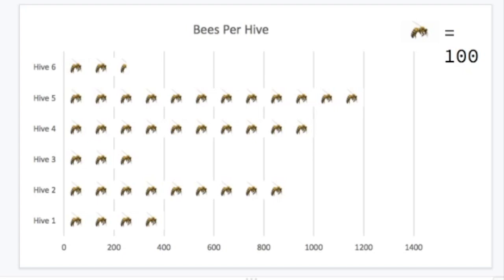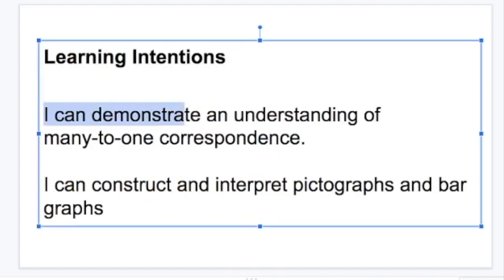Let's look back at that learning intention. I can demonstrate an understanding of many-to-one correspondence. Many-to-one means that one picture in a pictograph is representing more than one. With the books, one picture of a book represented two books. And with the bees, the picture of a bee represented 100 bees. The next few slides will give you an opportunity to demonstrate your understanding of many-to-one correspondence.